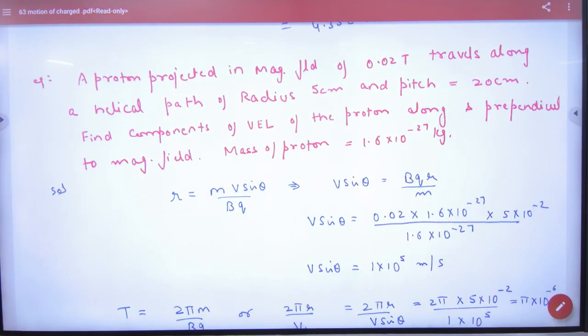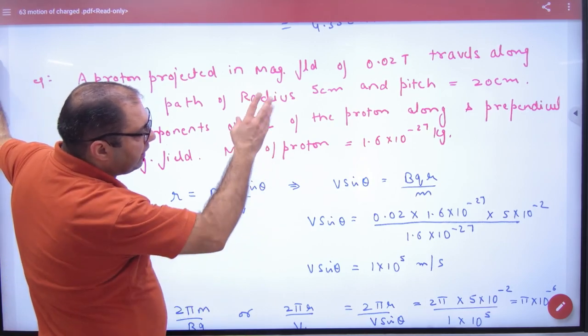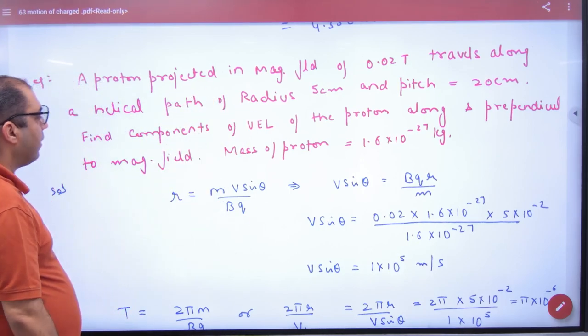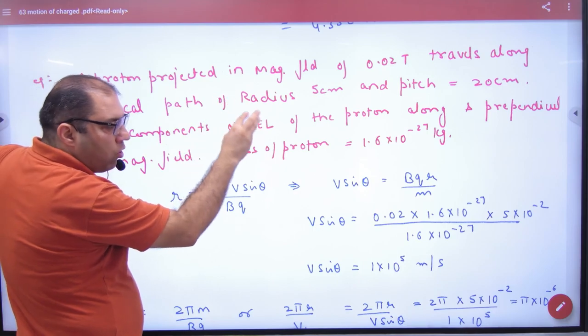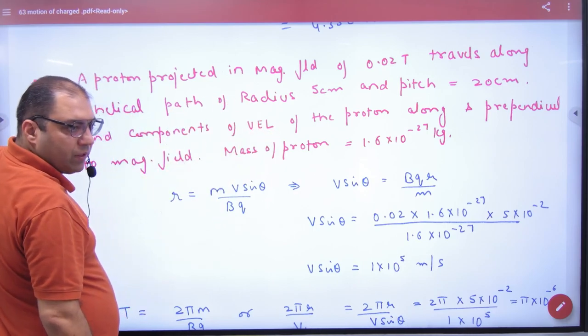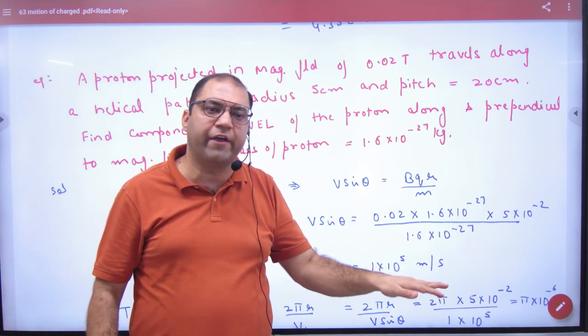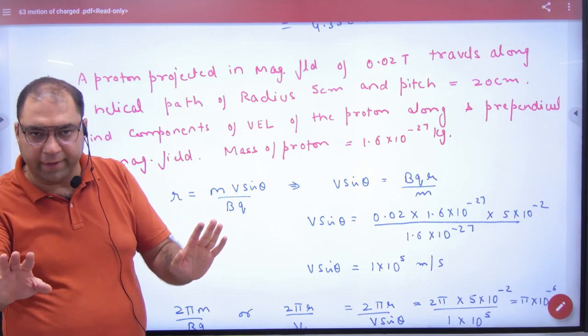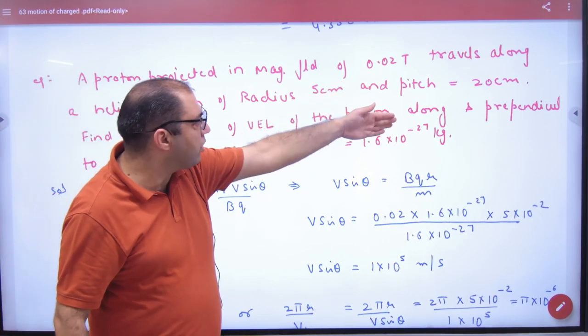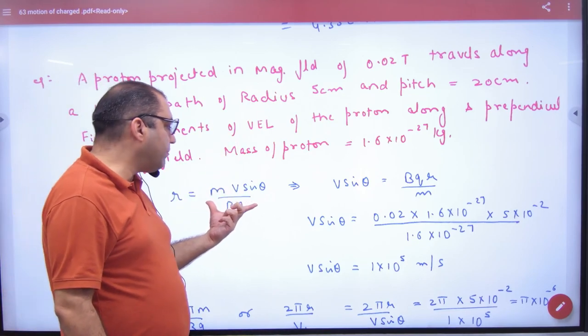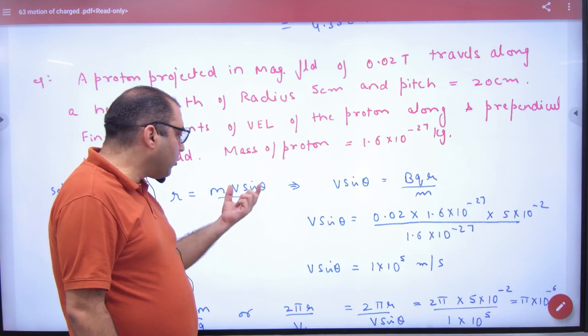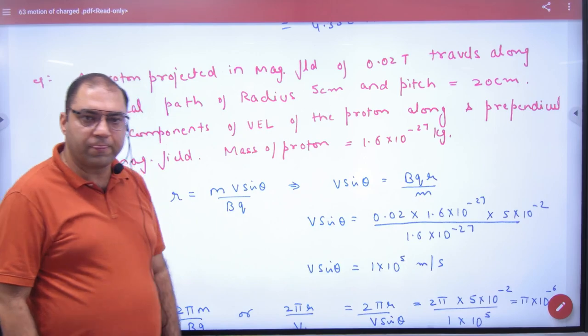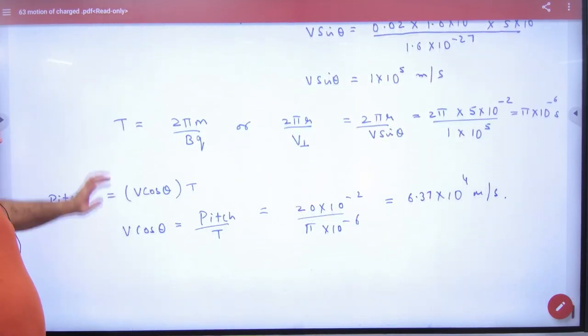Next. A proton is projected in magnetic field B given, travels along a helical path of radius given and pitch given. Find component of velocity of the proton along and perpendicular to magnetic field. So magnetic field along helix velocity what does v cos theta but what does v sin theta? We both get out of time. What is given? In this case you have a pitch given and a radius given. What do we have done? m v sin theta by bq. What do you want to get out of v sin theta? Cross multiply by bq by m. And then we have to get out of time period.